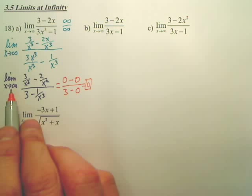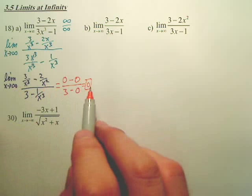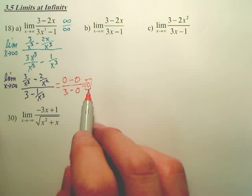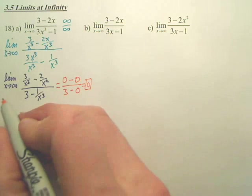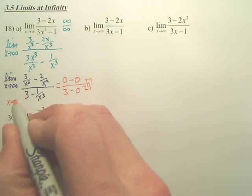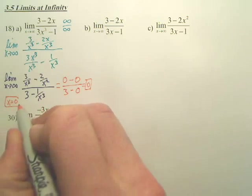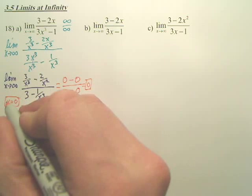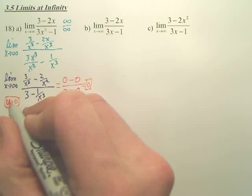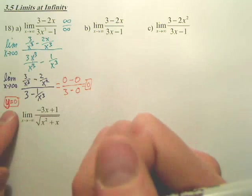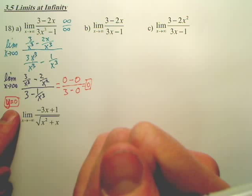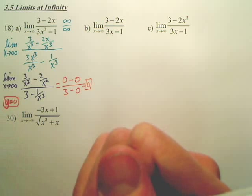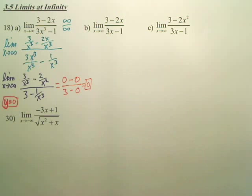So as we go to infinity, your graph is going towards 0. You actually have a horizontal asymptote — not x, sorry — horizontal asymptote lines are y equals something. Y equals 0 is actually a horizontal asymptote on the positive infinity side. It could be different on the negative infinity side.